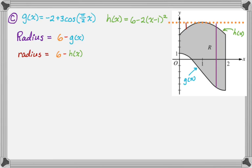So now we want to write our volume. So volume is going to be pi times the integral of big R squared minus little R squared. So it's going to be pi. Don't forget that. The integral from zero to two of our big radius is six minus G of X. So the quantity six minus G of X, and then you got to square that